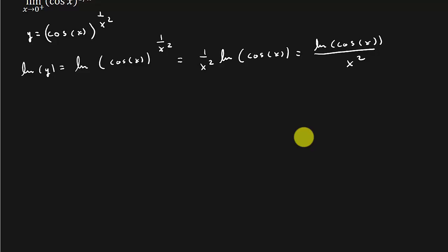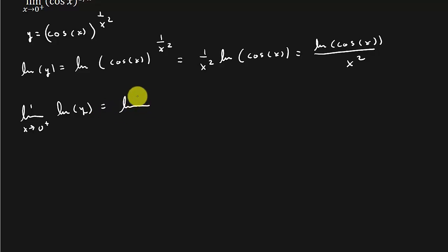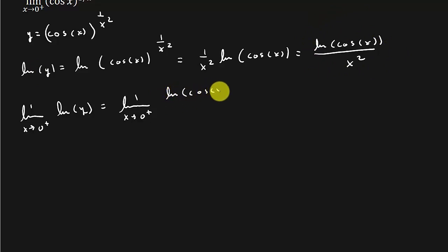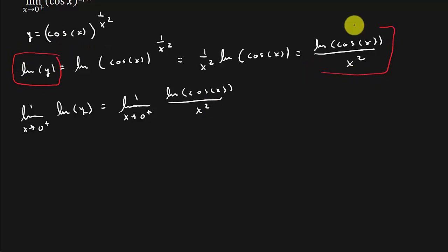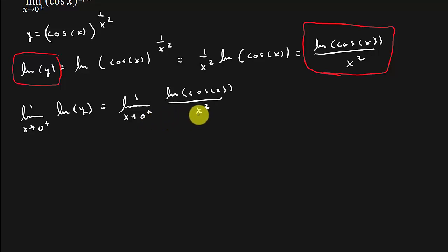Let's take the limit as x goes to zero from the right of natural log y. That equals the limit as x goes to zero from the right of natural log cosine x over x squared. If we plug zero in for x, cosine of zero is 1, so that's the natural log of 1, which is zero. And zero plugged in for x gives zero squared, so we've got zero over zero. Here we can apply L'Hôpital's rule.